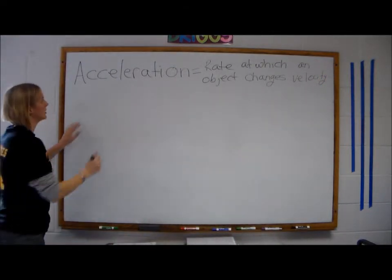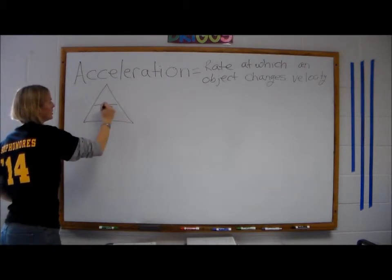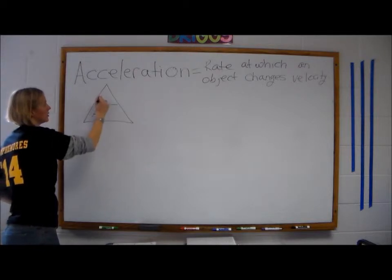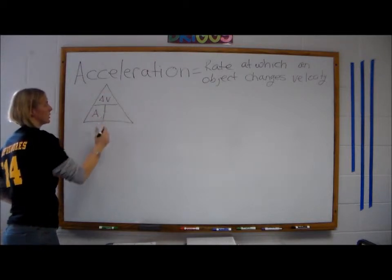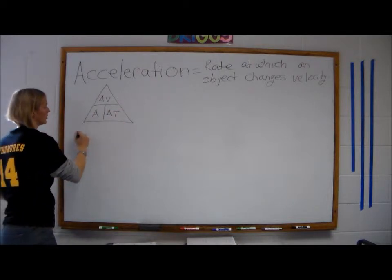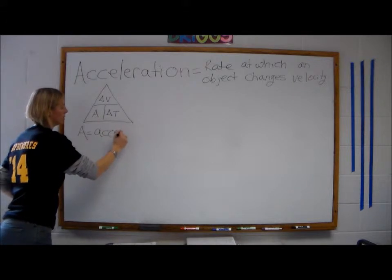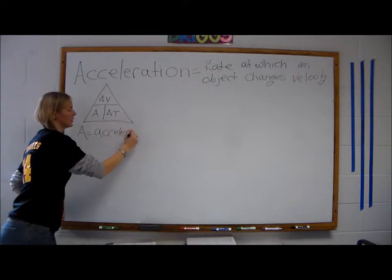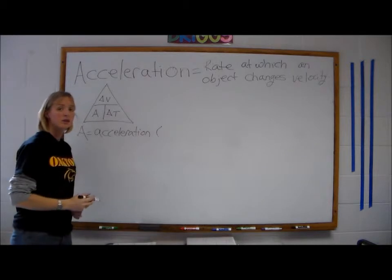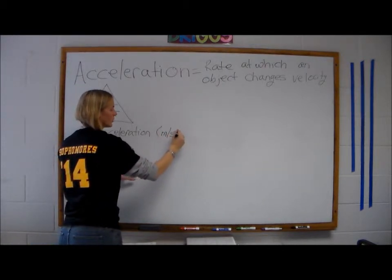We have one more triangle we're going to use for this unit. We have acceleration equals our change in velocity and our change in time. A equals acceleration. Our units for acceleration are usually going to be meters per second squared.